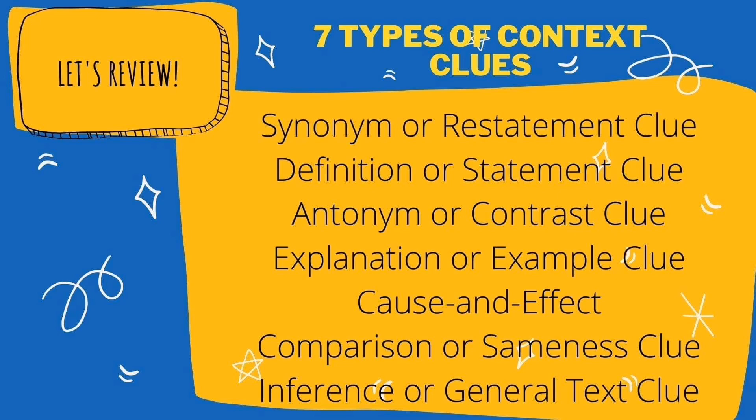Fifth, the cause and effect clue explains the reason and result of an event or action. Sixth, comparison or sameness clue presents the similarities in meaning or context. Last, we have the inference or general text clue, wherein it provides the meaning of unfamiliar words that can be inferred or guessed from the description of the situation.